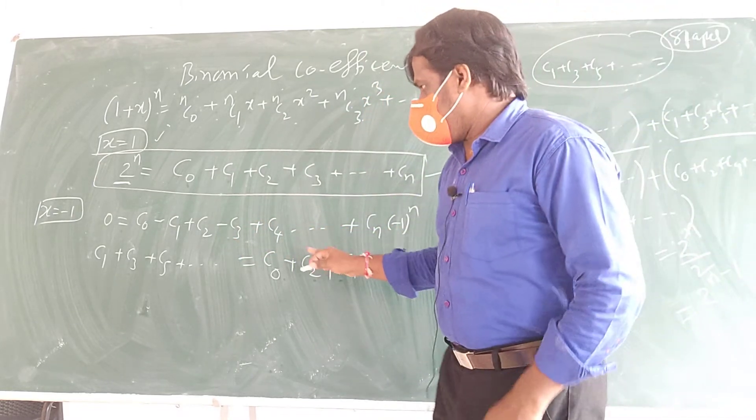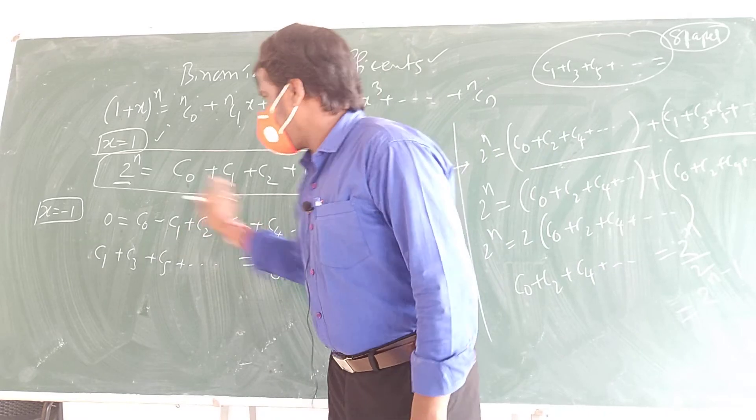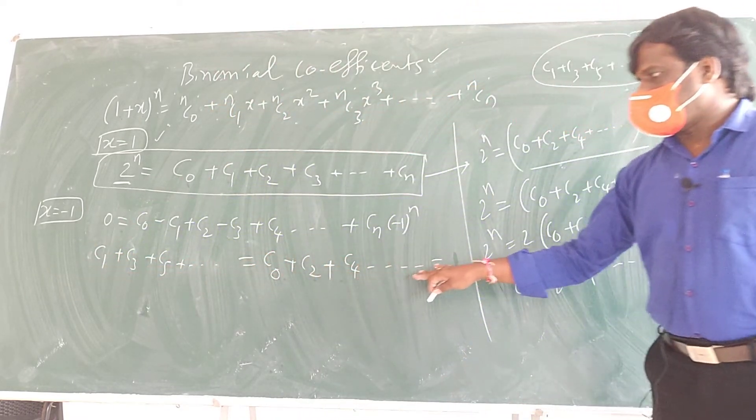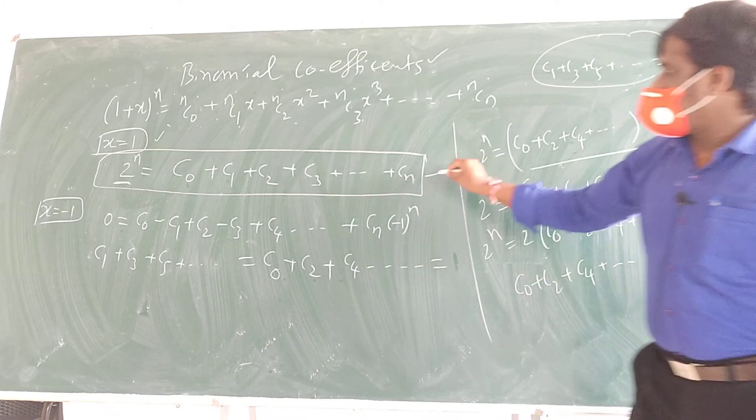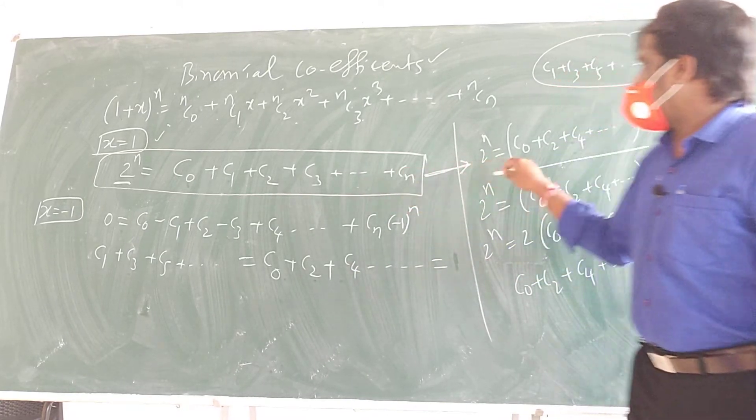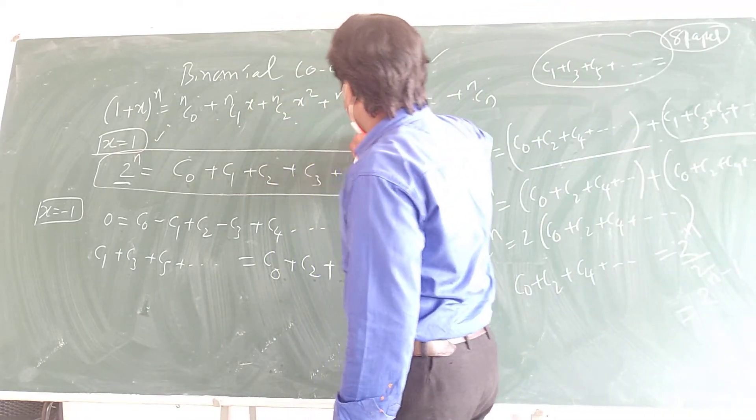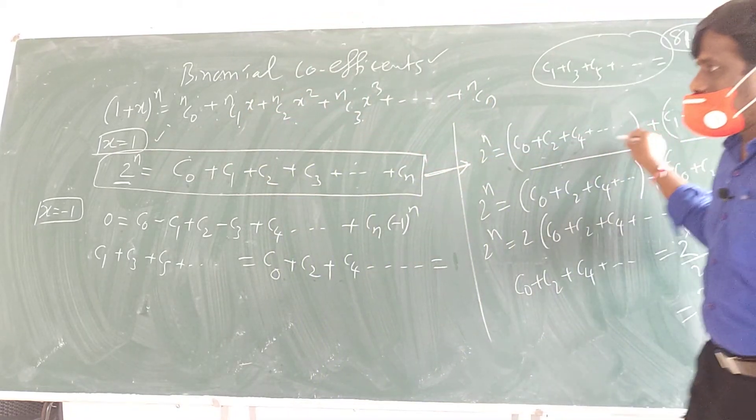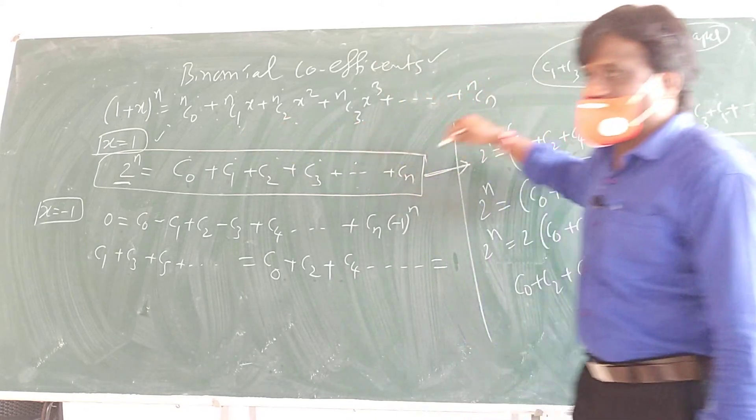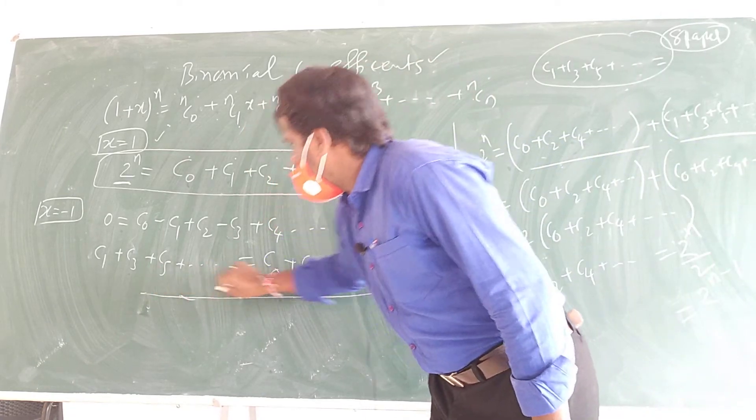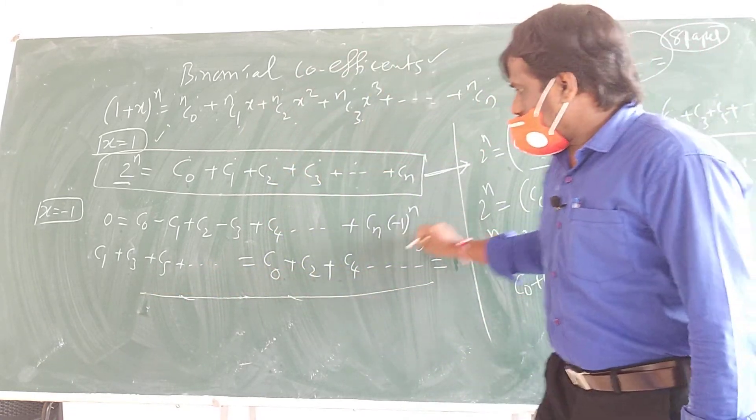Now what I say is, this negative, all I am sending this side, so C1 + C3 + C5 + ... is equal to C0 + C2 + C4 + ... And now this expansion I am dividing into two parts: C0 + C2 + C4 gathering one time, C1 + C3 + C5 gathering one place.